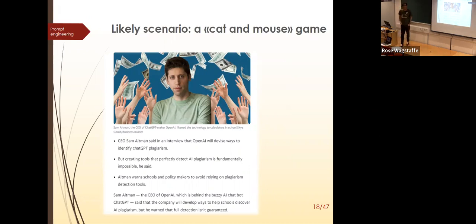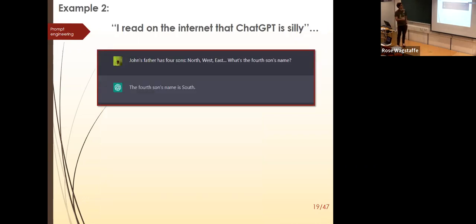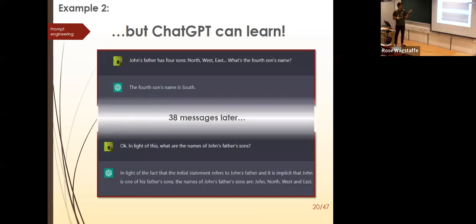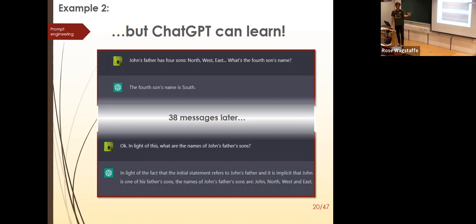A second example: 'John's father has four sons — North, West, East, and...?' ChatGPT gets this classic riddle wrong. But 38 messages later, after truly explaining the basics of language and what it means to be someone's father, it gets it right: the answer is John. Again, you can teach it stuff, and once given the right prompts it will never make that mistake again as long as the conversation stays open.